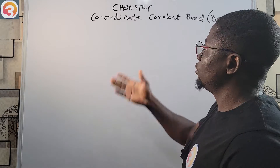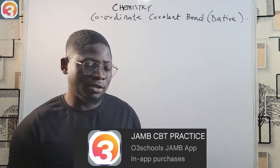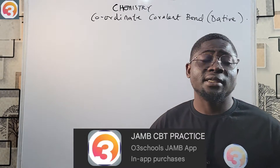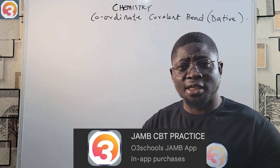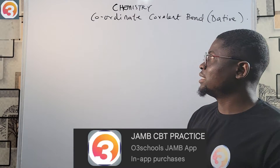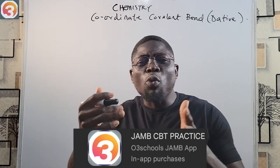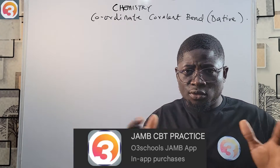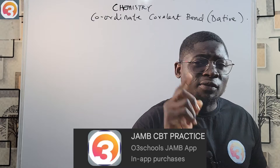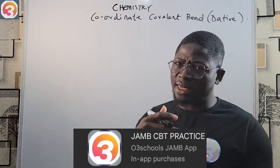Hello guys, welcome back to JAM Chemistry class. Today I'm going to be looking at coordinate covalent bond, which is also called dative bond. In our study of bonding, we've looked at ionic bond, which involves transfer of electrons from one atom to another, and covalent bond, which involves sharing of electrons between atoms. But in coordinate covalent bond, the shared pair of electrons is donated by only one of the atoms sharing it.